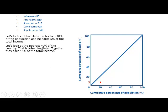Then we look at the poorest 40% of the country, that is John and Peter. Together they earn 15% of the total income — 15 divided by 100 gives us 15%. So if we show that on the graph, 40% of the population earns 15% of the total income.